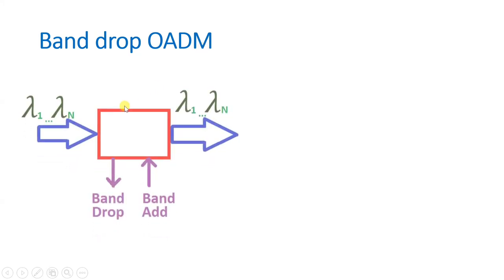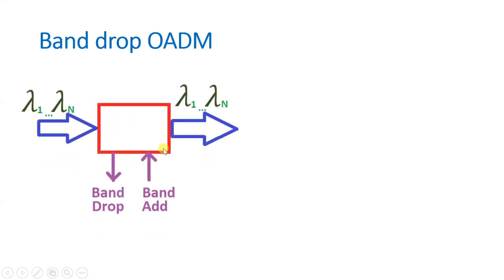Let us look at the last type — band drop OADM. In band drop OADM we are not dropping individual wavelengths; we are dropping a band. Here lambda 1 to lambda n wavelengths come into the OADM and lambda 1 to lambda n wavelengths are again present on the output fiber. We are dropping a band and adding a band. A band is a group of wavelengths or a group of channels, so a group of channels can be added or dropped in band drop OADM.